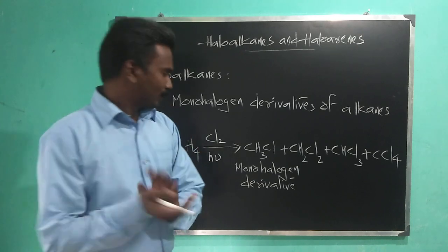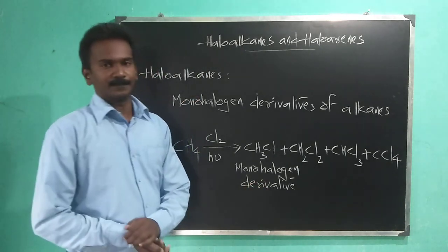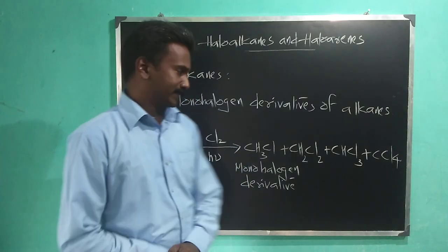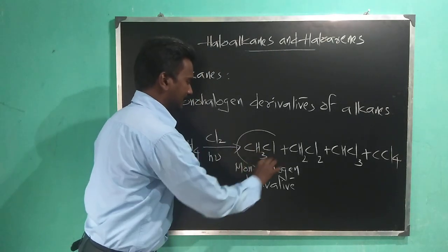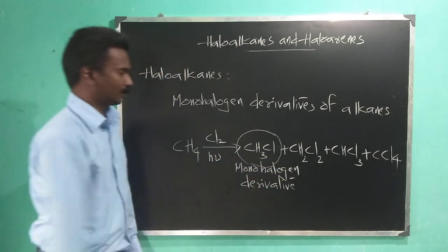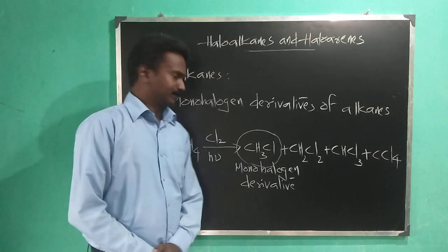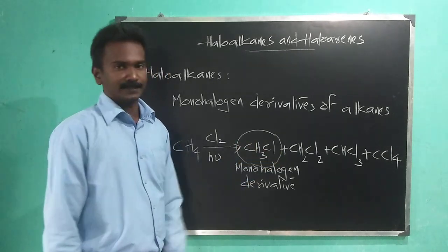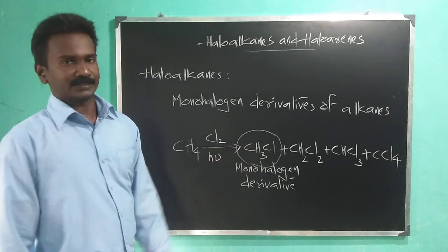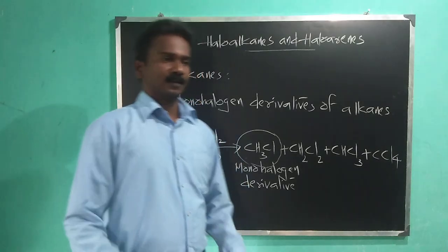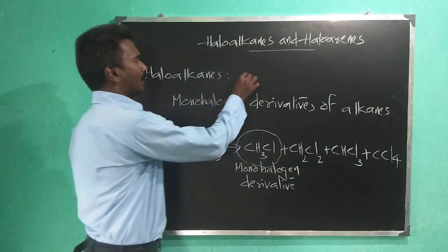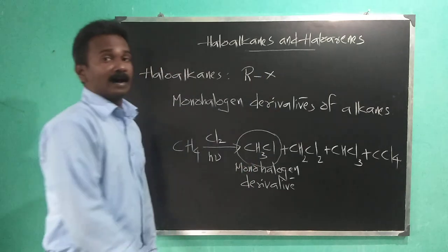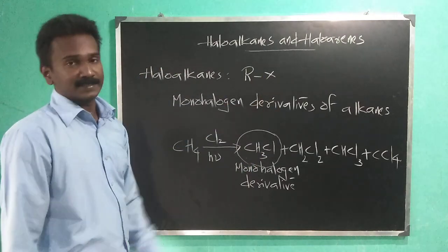We will mainly focus on monohalogen derivatives because monohalogen derivatives are termed as haloalkanes. Let us see this compound — two parts are there: an alkyl group (methyl) and the halogen atom. Based on this structure we can write the general representation as R-X, where R is the alkyl group and X is the halogen atom.